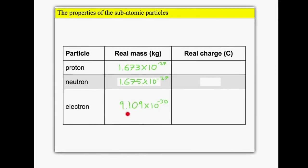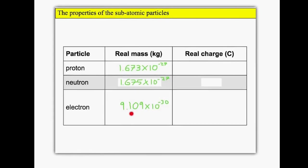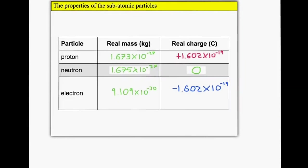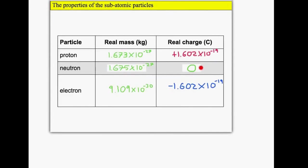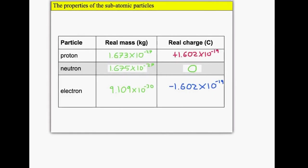The mass of the electron is much smaller, 9.109 times 10 to the minus 30. The actual charge of the proton is positive 1.6, and the electron is minus 1.6, exactly the same. Neutrons have no charge in Coulombs.